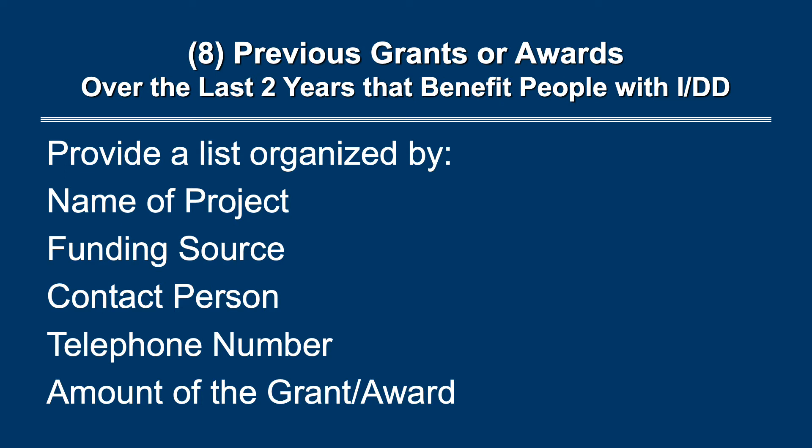Eighth is a list of all previous grants or awards that you have received over the last two years that benefit people with IDD. You are asked to organize your list by name of project, funding source, contact person, telephone number, and amount of the grant or award.